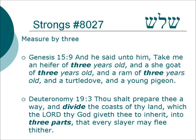There's also a verb root which derives from shalosh — from three — shin lamed shin, and it means to measure by three. In Genesis 15:9, 'And he said unto him, Take me a heifer of three years old, and a she-goat of three years old, and a ram of three years old, and a turtle dove, and a young pigeon.' You can see by the fact that the words 'years old' are in italics that those words don't actually appear in the Hebrew text. There's just this idea of measure by three.